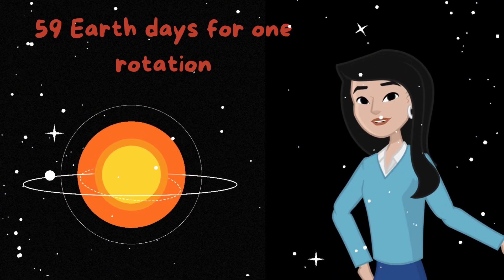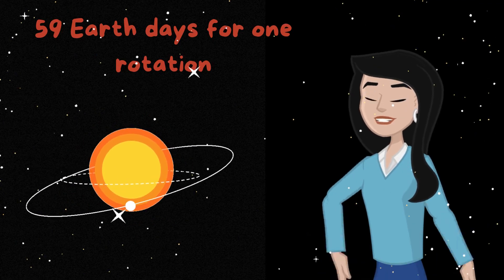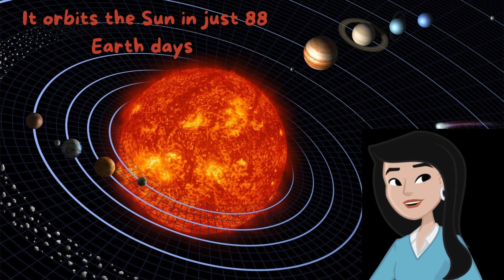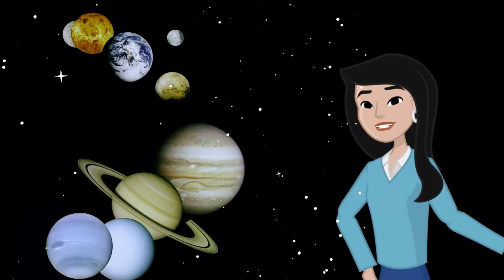Mercury's a slow spinner. It takes 59 Earth days for one rotation. But its year is lightning fast. It orbits the sun in just 88 Earth days. Imagine celebrating your birthday every three months.